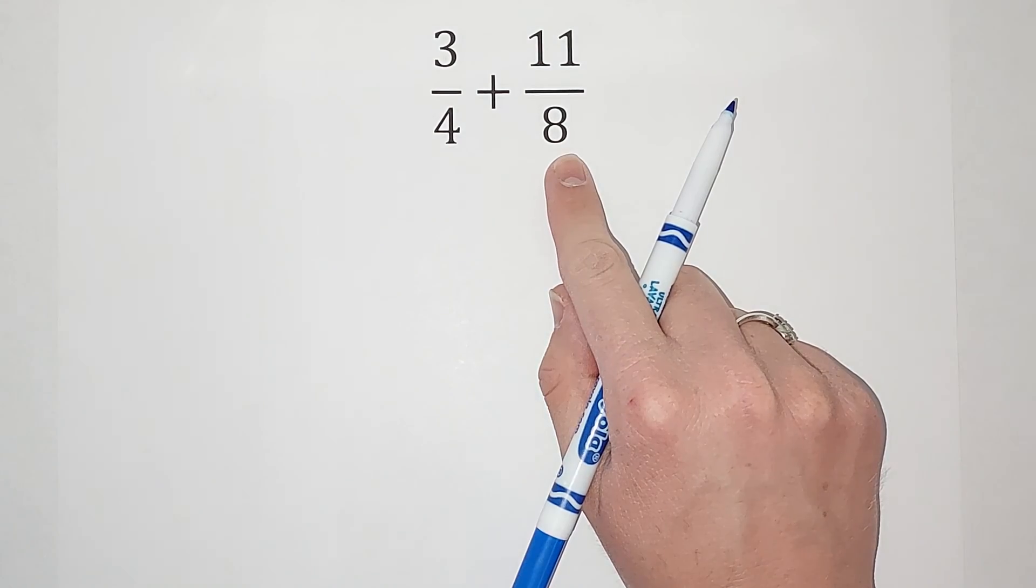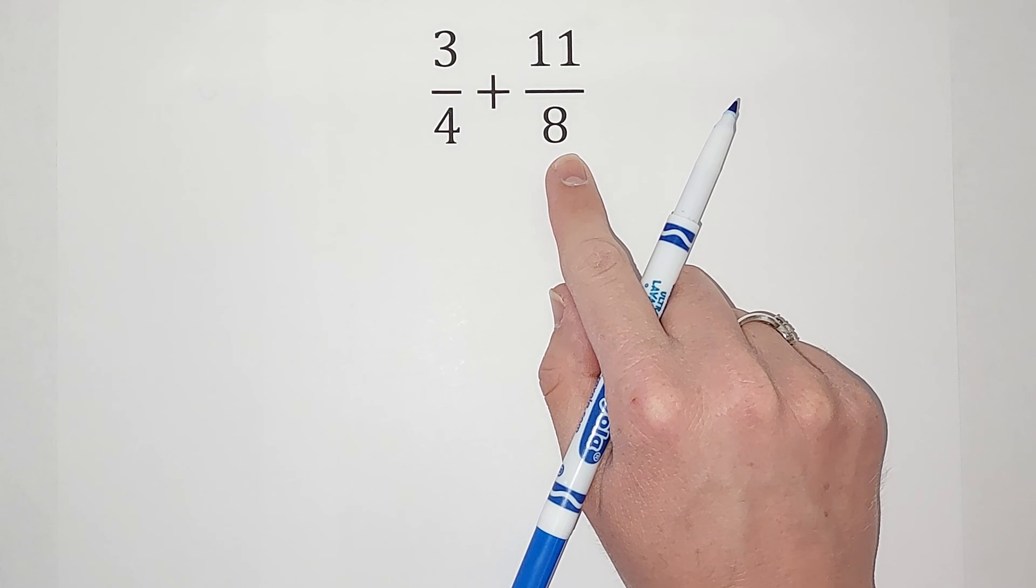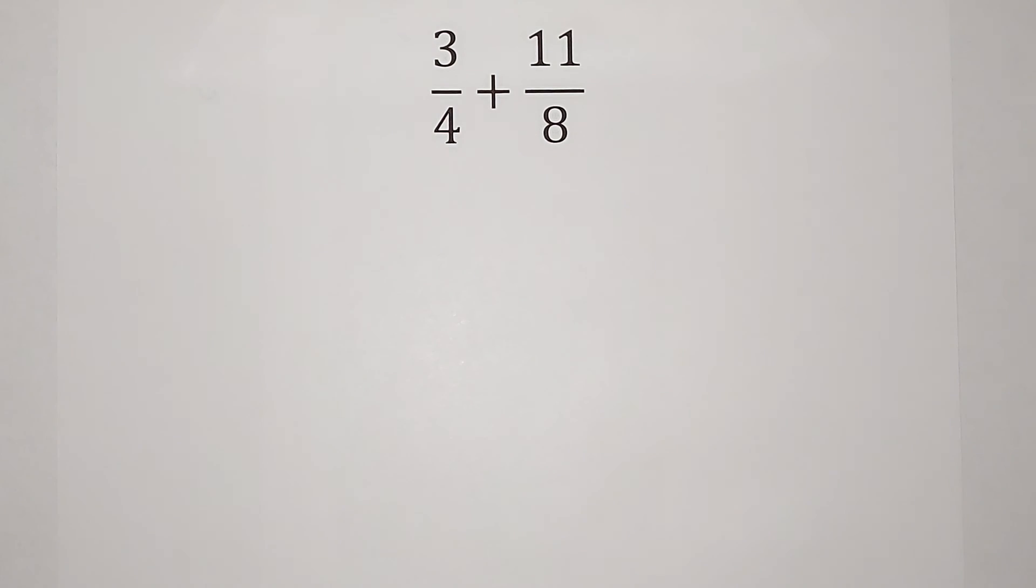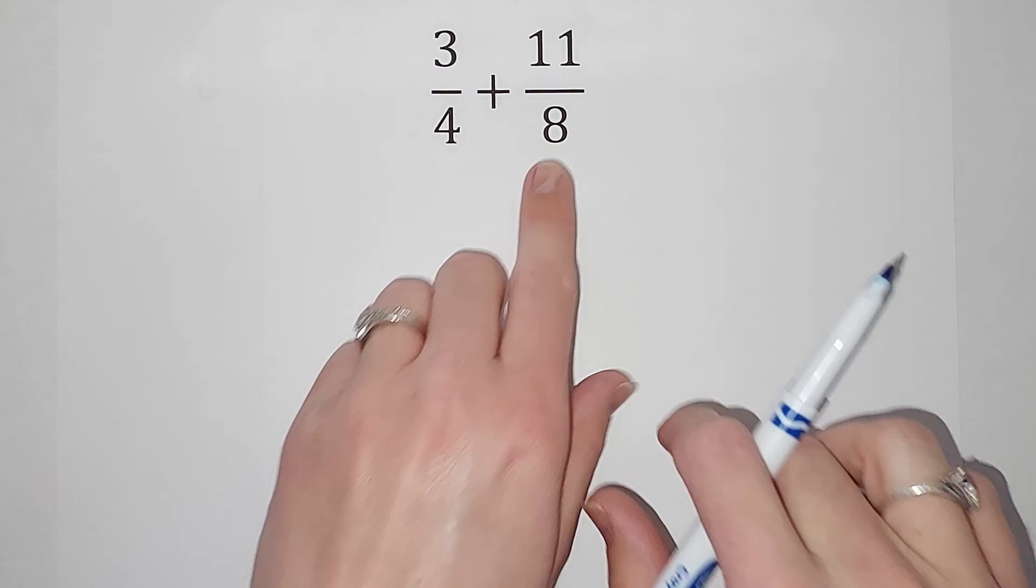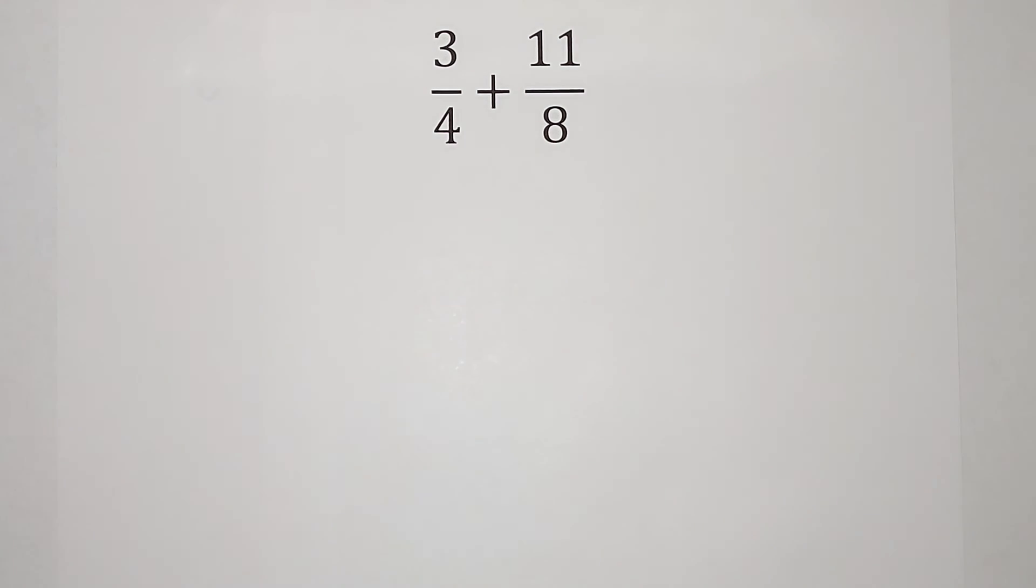So what is the smallest number four and eight both go into? Well, they both go into eight. So good news. This one already has a denominator of eight, so we don't have to change that one.